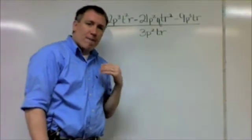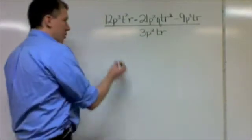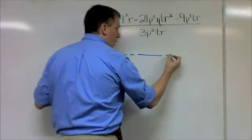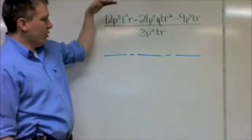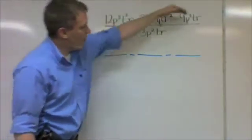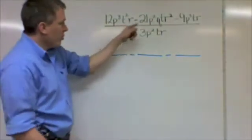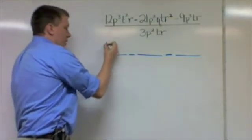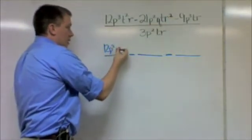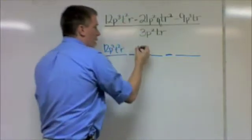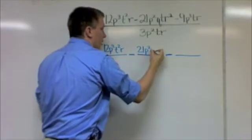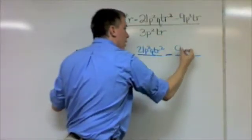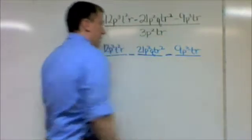Another way that might be more visual for some of you is to write this out as three division problems. I'm going to do three division problems: I'm going to divide this by that, that by that, and the last one by it. And since there's subtraction on each one, that's why I have a minus sign here. So I'm going to put on the top 12p³t²r here and on the top there, I'm going to put 21p²qtr². The minus sign is right here, and 9p³tr. That's going to be on the top.